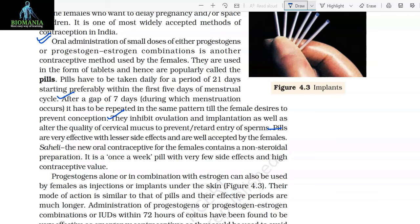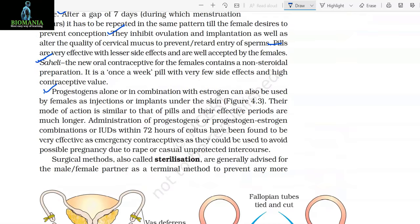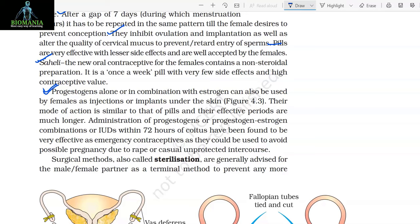After a gap of 7 days during which menstruation occurs, it has to be repeated in the same pattern till the female desires to prevent conception. They inhibit ovulation and implantation as well as alter the quality of cervical mucus to prevent or retard entry of sperms. Pills are very effective with lesser side effects and are well accepted by females. The new oral contraceptive for females contains a non-steroidal preparation — it is a once-a-week pill with very few side effects and high contraceptive value.